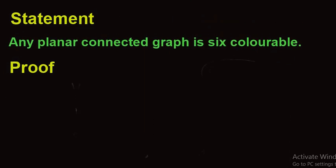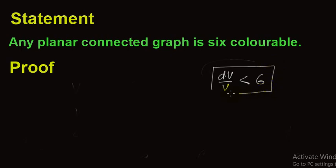In order to prove this result, if we succeed in proving that the average degree of a planar graph is less than six, then our theorem is proved. So we have to use a maximum of six colors. If every degree of a planar graph is less than six, then maximum of six colors are used to color a planar graph.